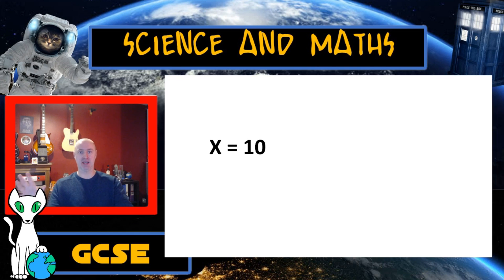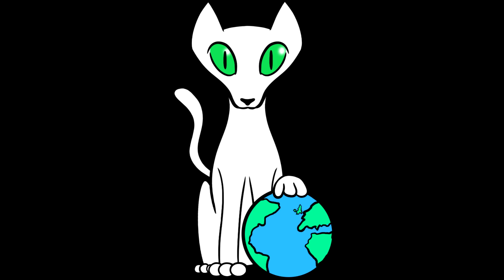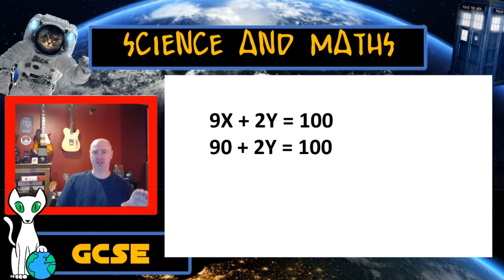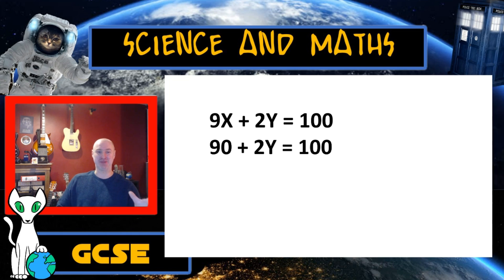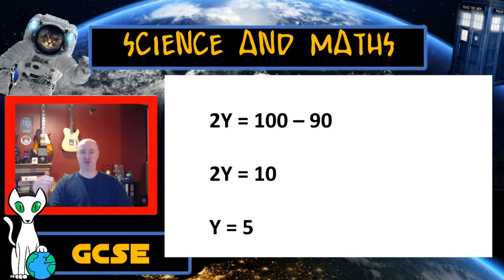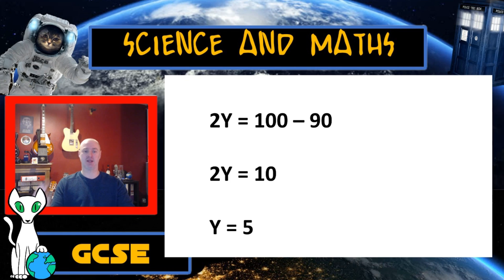Now I know x equals 10, I can figure out what y equals by taking that 10 for x and substituting it into one of the linear equations — 9x plus 2y equals 100. So if x equals 10, I can read that as 90 plus 2y equals 100. I'm going to put my number on the other side of the equals sign, giving me 2y equals 100 minus 90. Therefore 2y equals 10, so 10 divided by 2 gives me y equals 5.